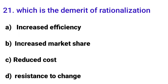Twenty-first MCQ: 'What is the demerit of rationalization?' Rationalization means restructuring and reorganizing business to improve efficiencies. Option A: increased efficiencies — that is an advantage, not a demerit. Option B: increased market share — also an advantage. Option C: reduced cost — also an advantage.